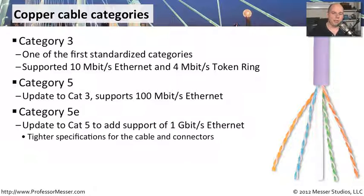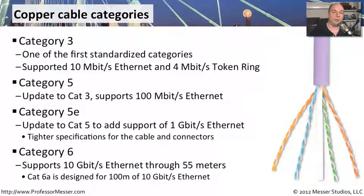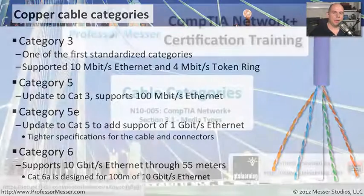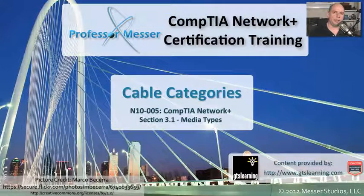Today, our latest category is Category 6. We're running 10 gigabit ethernet over copper using Category 6, which supports 55 meters. The enhanced version, Category 6a, supports 100 meters. So if you're doing 10 gig ethernet over very long runs, you'll want Cat 6a. Each category type has different costs associated with it, so you'll want to buy the right category for the networking infrastructure you need in your environment.